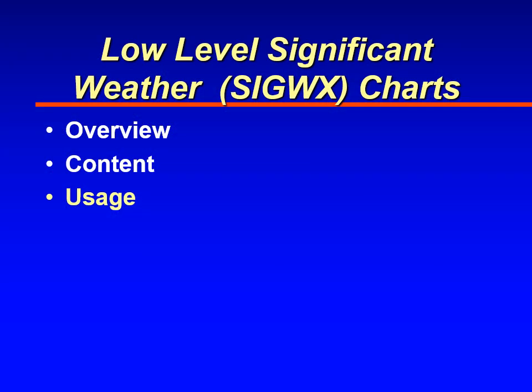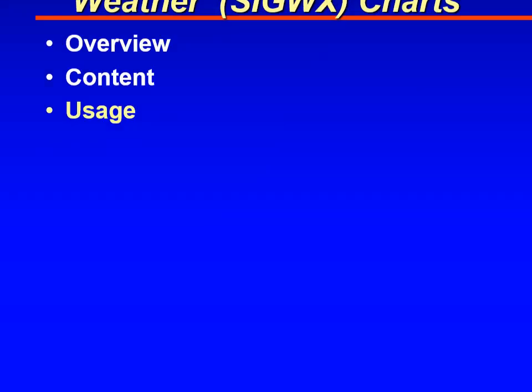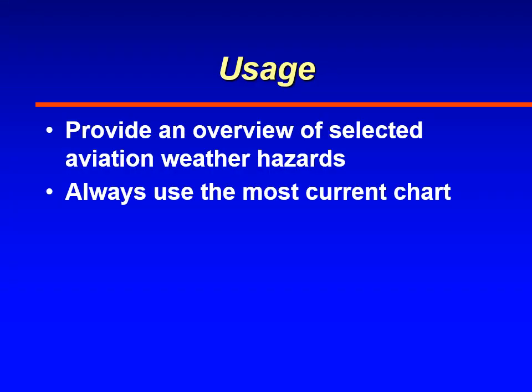Now we'll talk about how to use the Low-Level Significant Weather Prognostic Chart. This chart gives you weather hazards, so you should use it during pre-flight planning to interpret where you might experience turbulence, IFR weather, or potential icing based on freezing levels. Always use the chart that is closest to your time of departure, looking into the future.